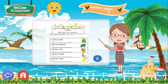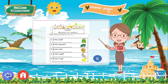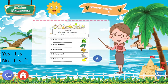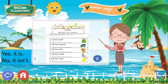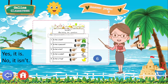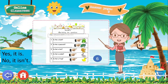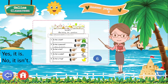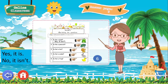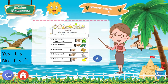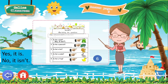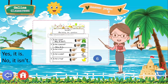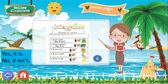On page 6, I want you to answer questions 1 up to 5. You have here 5 questions and I want you to answer either 'Yes, it is' or 'No, it isn't.' For number 1: Is it a peacock? The answer is: Yes, it is. Very good!